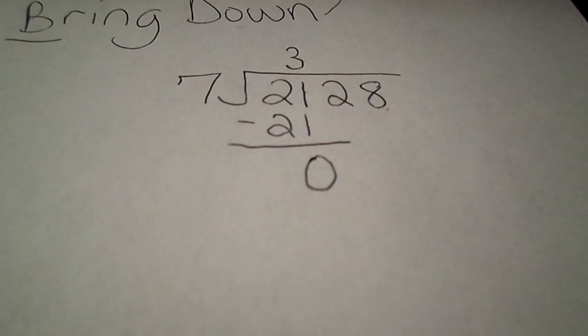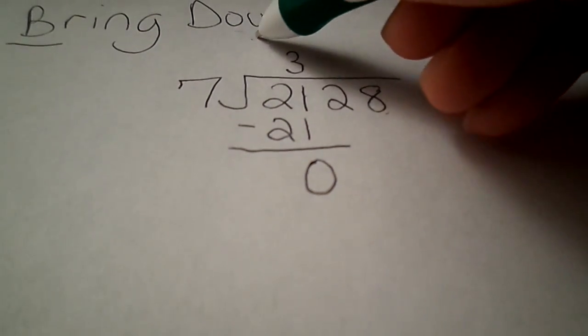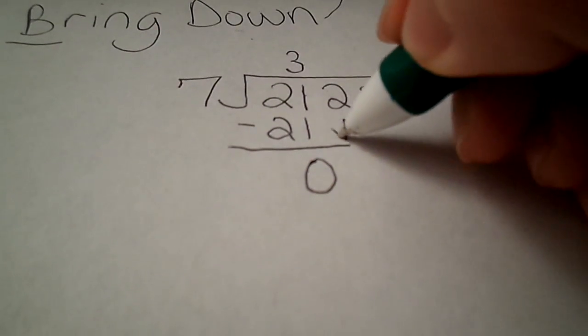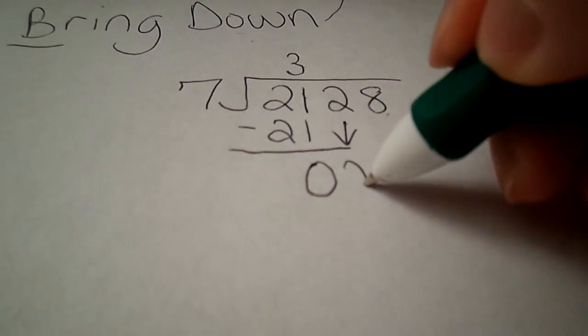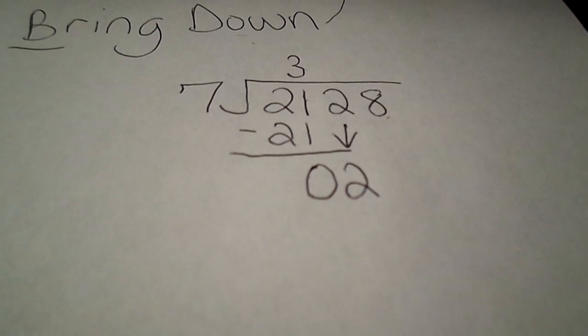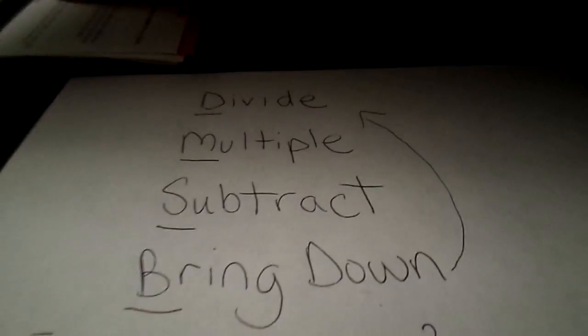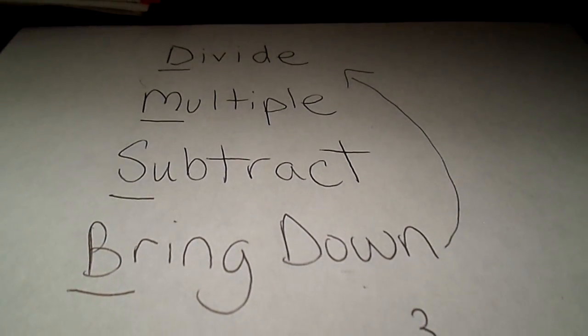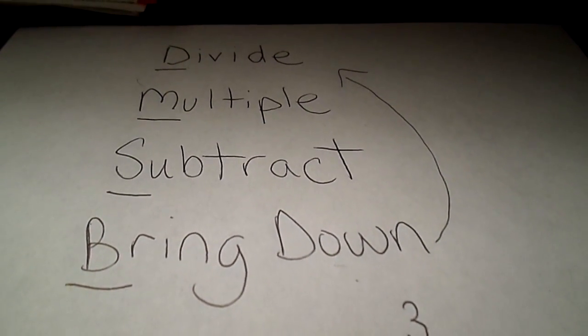And 21 minus 21 is of course 0. Okay. Now we're at our fourth step which is bring down. Okay. Now divide. Notice we're starting over again. Bring down. Go back up to divide.